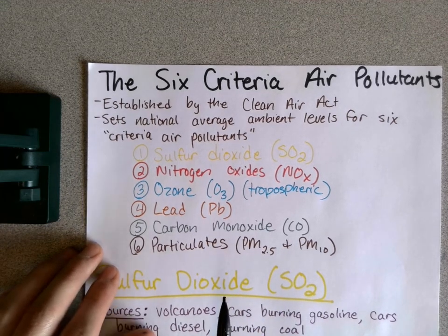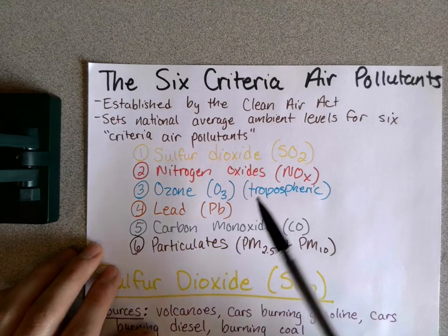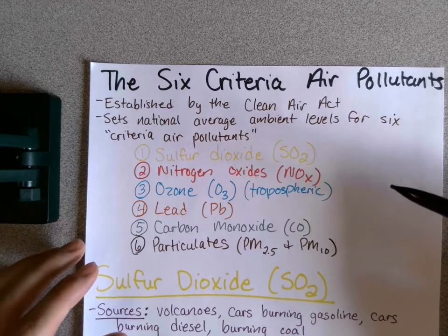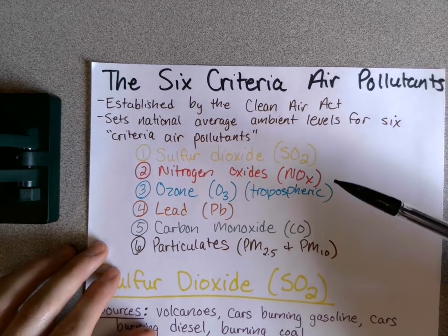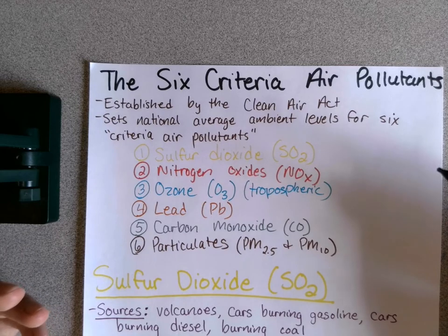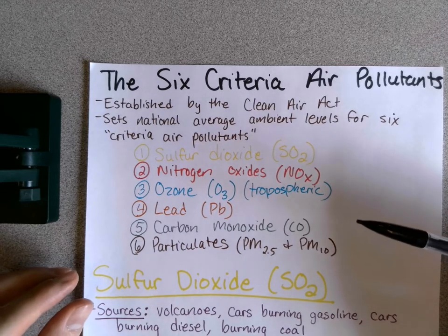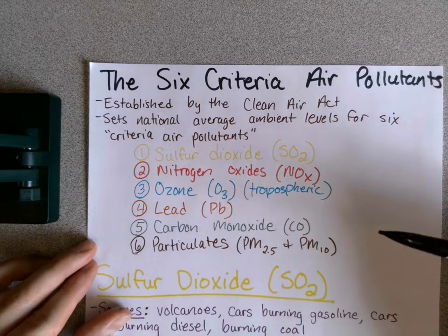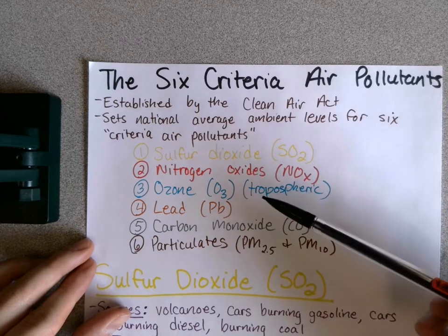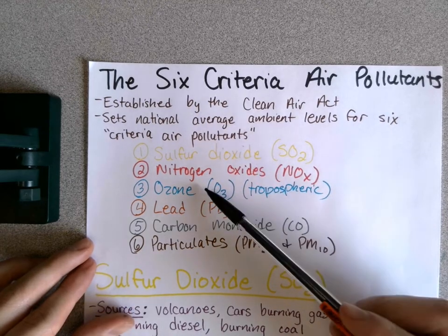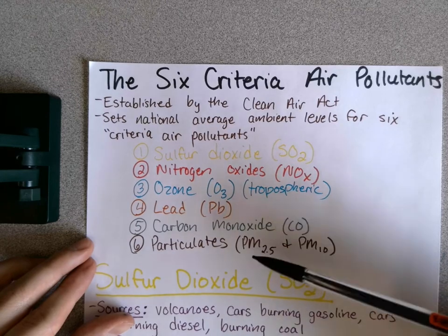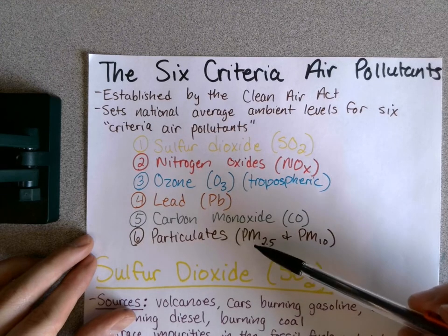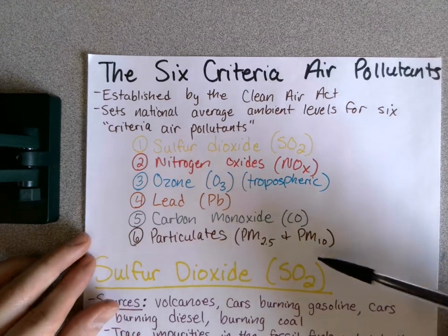Every single day around the United States, different cities are measuring the concentrations of all of these. If they don't meet the standards for a couple of days, then they get put on an improvement plan by the Environmental Protection Agency. After the Clean Air Act was passed, the only two that really exceed the daily limits are ozone and particulates. Ozone because people drive so many cars, and particulates because anything like wind, tree pollen, or really anything can stir them up.